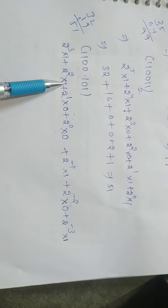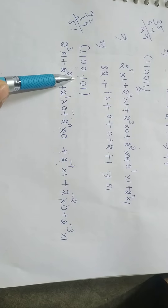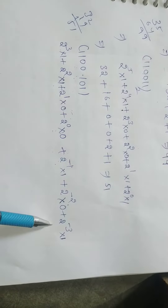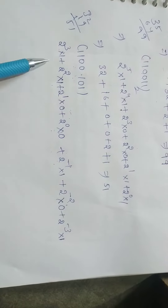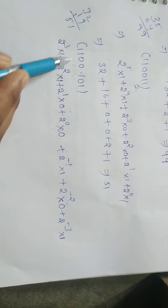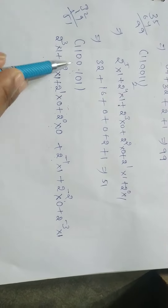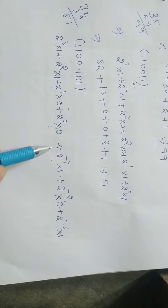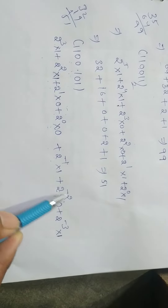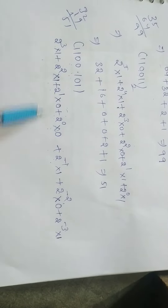After the decimal point, negative powers are used. So we have: two power three into one, plus two power two into one, plus two power one into zero, plus two power zero into zero, plus two power minus one, and two power minus two, and two power minus three.